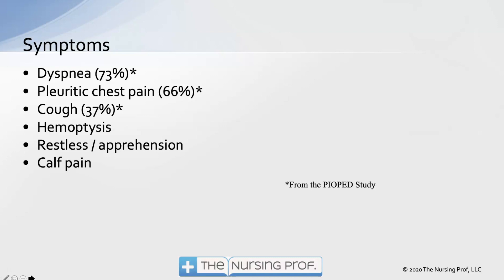The symptoms most frequently seen with PE come from the PIOPED studies done in the 1980s and 1990s. Dyspnea occurs most often, followed by pleuritic chest pain — sharp, localized, worse on inspiration — and cough. These are the three main symptoms, followed by restlessness, apprehension, hemoptysis, and calf pain. Calf pain is notable since it was frequently taught as a sign that the patient has a VTE and pulmonary embolism.